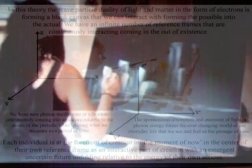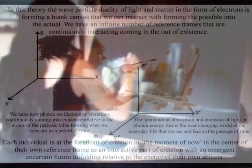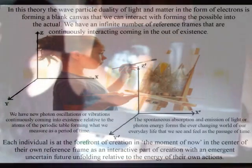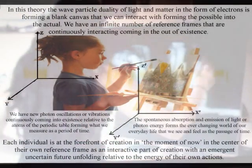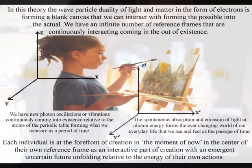In this theory, the wave-particle duality of light and matter in the form of electrons is forming a blank canvas that we can interact with, forming the possible into the actual.